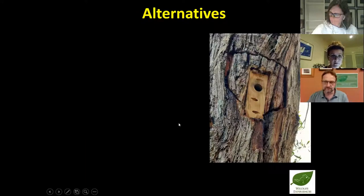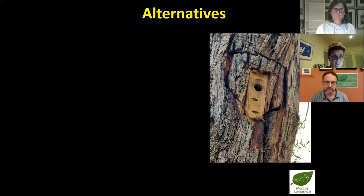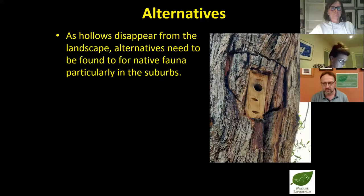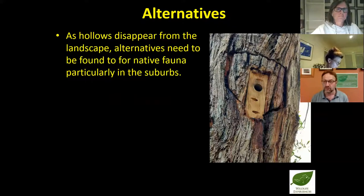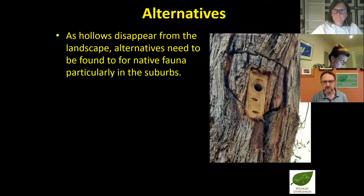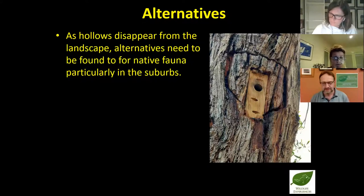If we don't have the trees — if we're in newer suburbs where existing trees are few and far between — what are our alternatives? Over time, more and more hollows disappear from the landscape. A neighbor might get a council permit to remove a tree or two or five, and those trees are gone from the neighborhood. So we need to find alternatives, particularly if we want to keep fauna in our suburbs — the food supply is still there, but they need housing too, to put it in human terms.